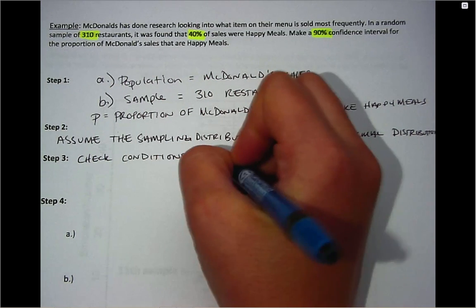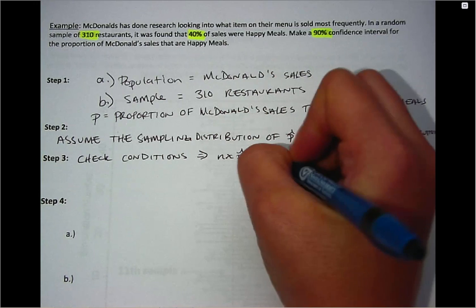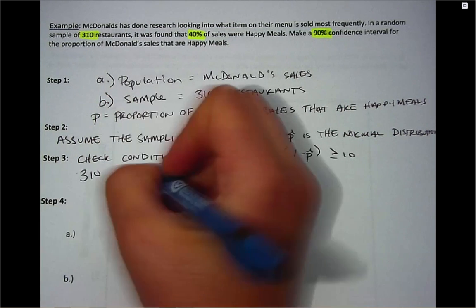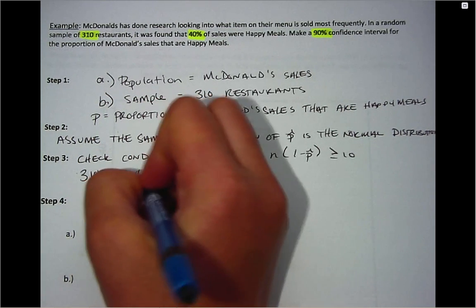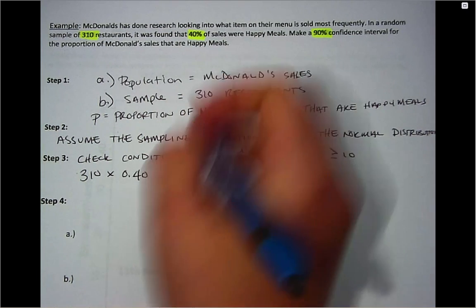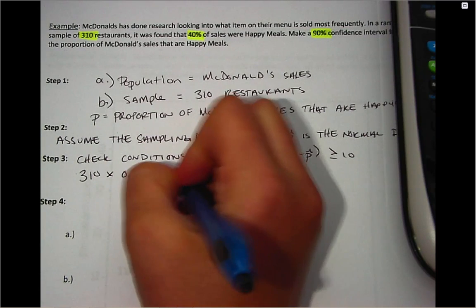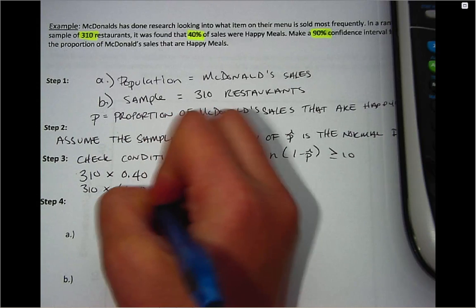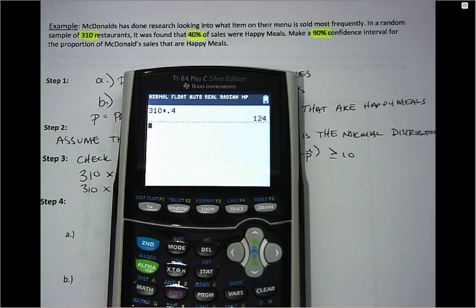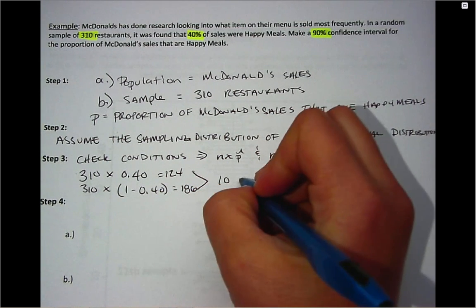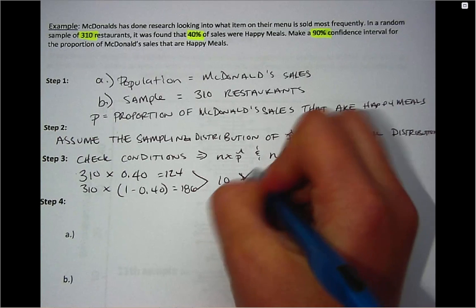And our conditions, remember N times P hat and N times 1 minus P hat both have to be greater than or equal to 10. So we have 310 is our N times P hat, which was stated up top to be 40%, so we have 124. And 310 times 1 minus 0.40 gives us 186. So because both of these are greater than or equal to 10, our conditions are met.